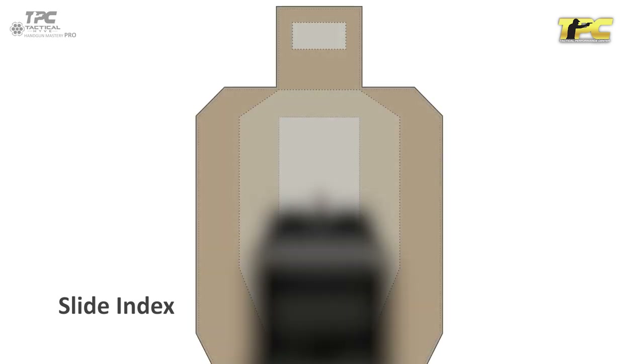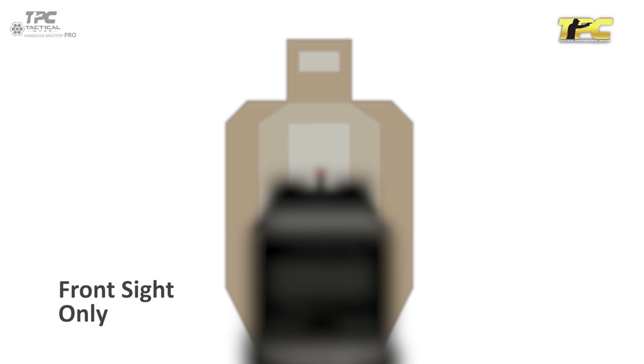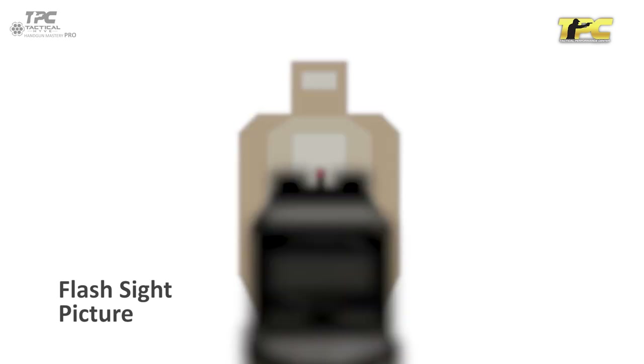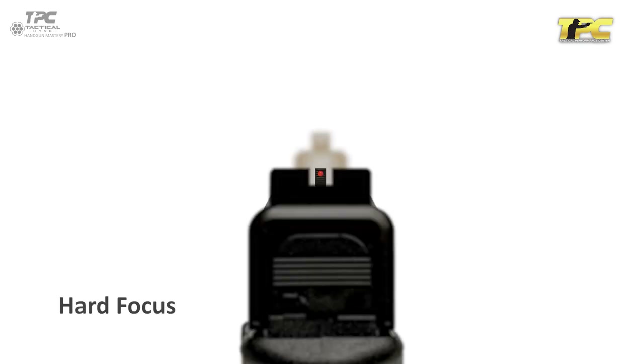Slide index — total focus on target. Front sight only focus — focus is still more towards the target but shifted back just enough to obtain the front sight image in the peripheral vision field. Flash sight picture — soft focus or medium focus — the focus is somewhere between the target and the front sight. Hard focus — the focus is entirely on the front sight.